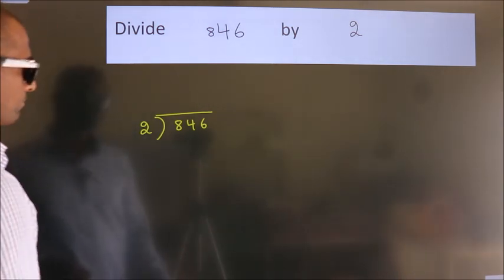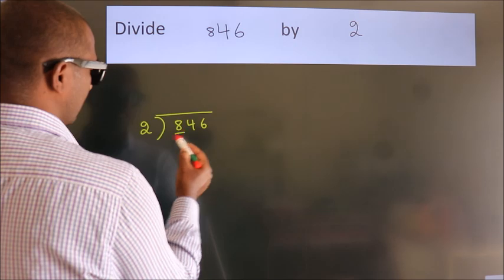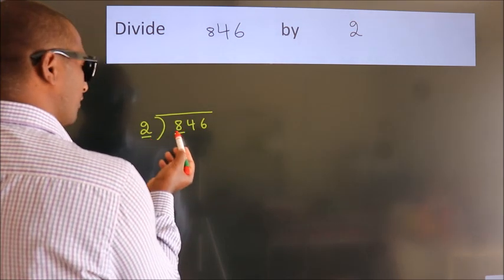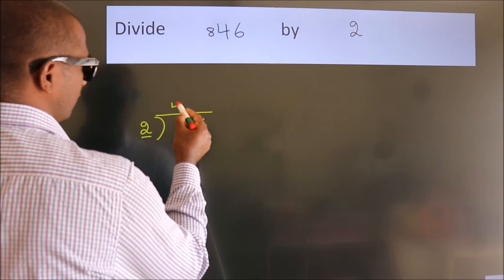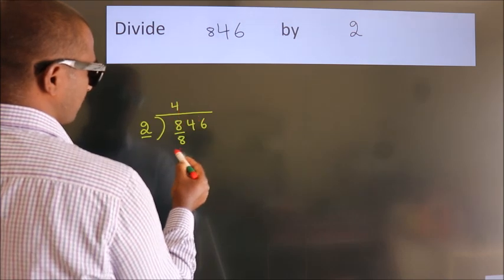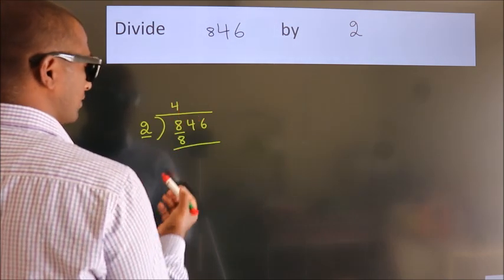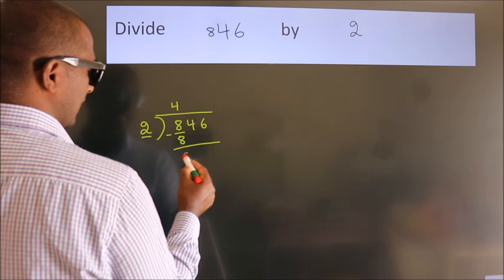Next. Here we have 8, here 2. When do we get 8? In 2 table, 2 4s 8. Now we should subtract, we get 0.